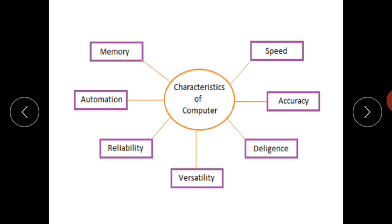Then we have memory. Memory — we have 10GB, 32GB, 64GB, TB, or external memory. This is the memory of the computer and mobile phones. We can store a lot of data — video, pictures, etc. — and we can download it. These are all the characteristics of computers and mobile phones.